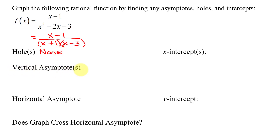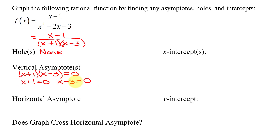Next, I need to look for vertical asymptotes. You take the simplest form of the function and set the denominator equal to 0. So I have (x plus 1)(x minus 3) equals 0. Setting each factor equal to 0: x plus 1 equals 0 gives x equals negative 1, and x minus 3 equals 0 gives x equals positive 3. So those are the equations of my vertical asymptotes.